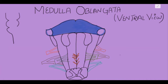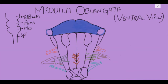The first part is the midbrain, then pons, then medulla oblongata, and then we have the spinal cord. In this lecture I'm going to discuss the medulla oblongata and its ventral view. In the coming lectures I will discuss the posterior view, the dorsal aspect, and cross-sectional views at different levels of the medulla oblongata.